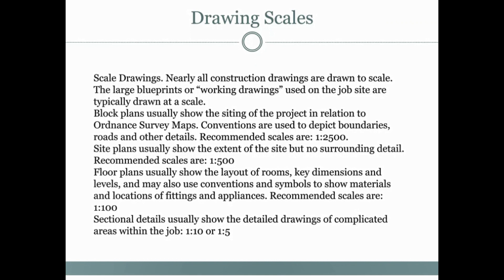Section details usually show the detailed drawing of complicated areas within the job, at scales like 1 to 10 or 1 to 5. Each drawing type has its own scale: floor plans at 1 to 100, site plans at 1 to 500, and Ordnance Survey maps at 1 to 2,500. These scales help us understand exactly how the structure will be built — how it appears on paper and how it will come out on site.